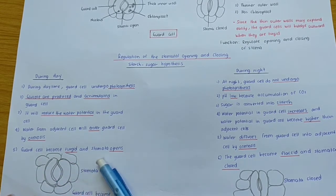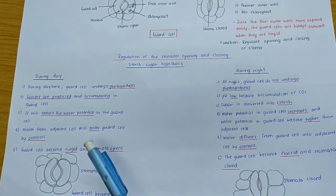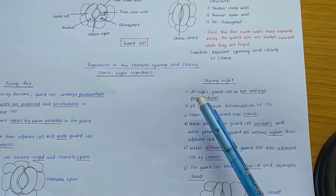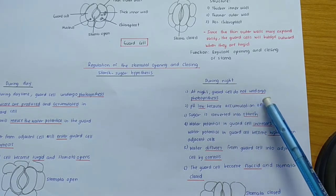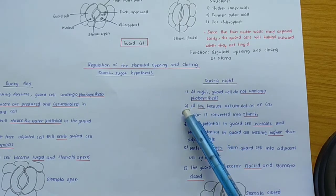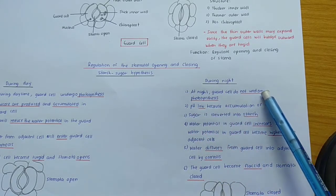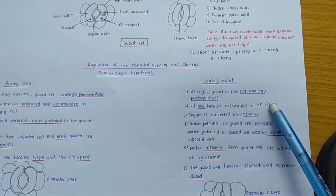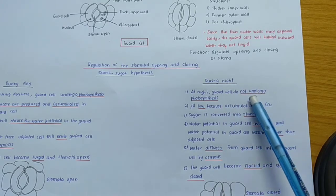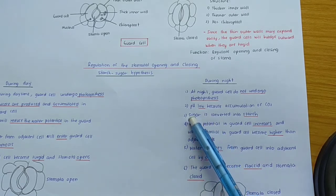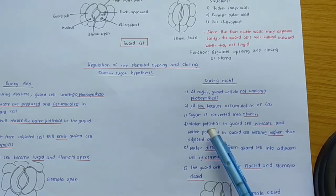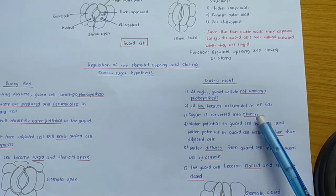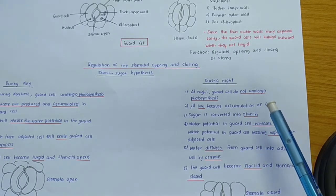As a result, the guard cell becomes turgid and the stomata will be open. This represents stomata open — the stomata opens because the guard cell becomes turgid. During the night, however, the guard cell does not undergo photosynthesis, so there is an accumulation of carbon dioxide, causing the pH to become low. The sugar is then converted into starch.